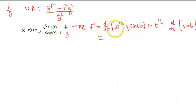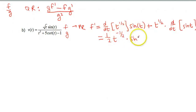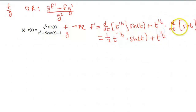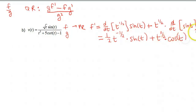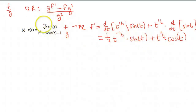So the derivative with respect to t of t to the 1/2 — that's a power, so we use the power rule: 1/2 times t to the negative 1/2. Sine of t just comes along. Plus t to the 1/2 times the derivative of sine of t, which is cosine of t. There really isn't much simplifying we can do with this, so let's just leave it big and ugly like that.